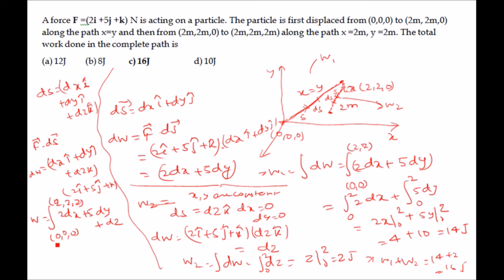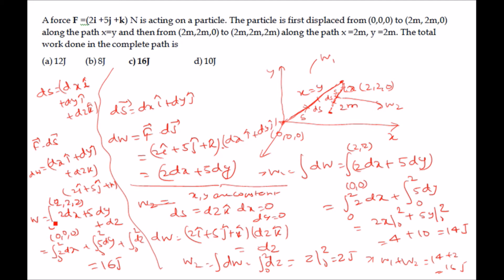We break it into three parts: 2dx from 0 to 2, 5dy from 0 to 2, and dz from 0 to 2. In examination, you can apply this shortcut method directly — just make the limit from (0,0,0) to (2,2,2) and calculate the total work done considering only the initial and final points.